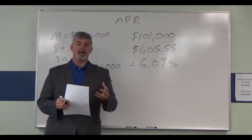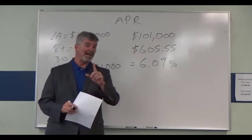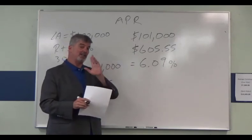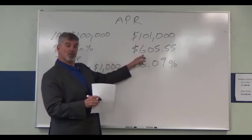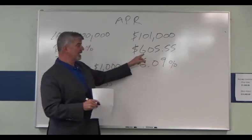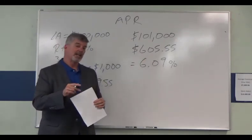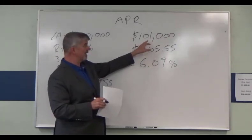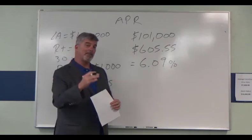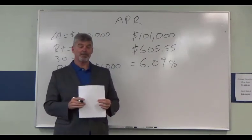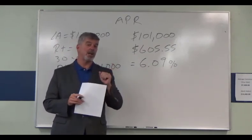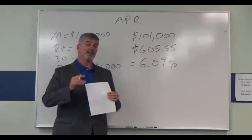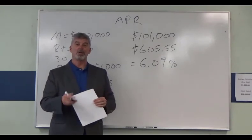Here is the way APR is typically calculated for longer-term loans like our 30-year loan. If we add the original loan amount of $100,000 plus the point of $1,000, that gives us $101,000. Taking a P&I payment on a mortgage calculator for $101,000 at 6% for 30 years gives us $605.55. If I then back-calculate — inputting that payment, the original loan amount of $100,000, and the 30-year term — the interest rate turns out to be 6.09%. That would be the APR on our $100,000 loan with one point.